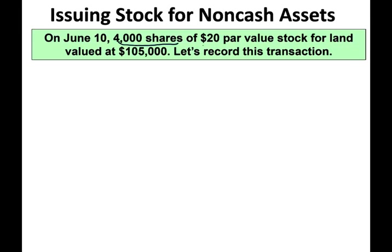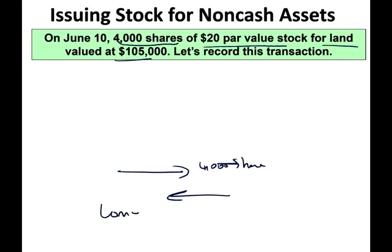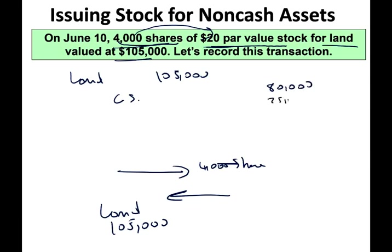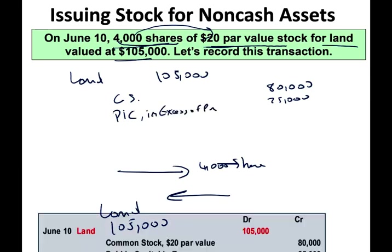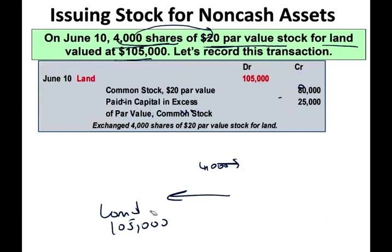We could also issue stocks for non-cash. On June 10th, 4,000 shares of $20 par value stock were exchanged for land valued at $105,000. We gave 4,000 shares and received land worth $105,000. We debit land $105,000. We credit common stock for 4,000 times $20, which is $80,000. The remaining $25,000 is credited to paid-in capital in excess of par. This is how we record issuing stock to acquire an asset rather than cash.